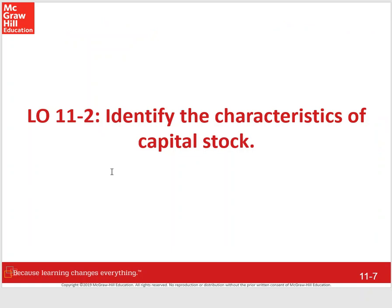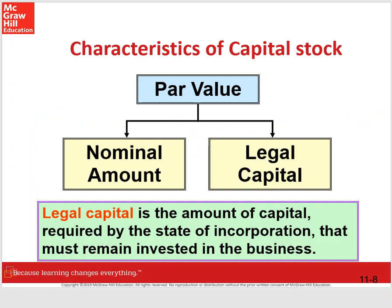We need to look at the characteristics of capital stock — we can use that term to replace what we thought of as common stock all semester. We were thinking of it as common stock with no par value. So what is par value? Par value is a nominal amount — meaning 'in name only.' The par value of a stock really doesn't mean anything; it's in name only. Legal capital is the amount of capital required by the state of incorporation that must remain invested in the business. But I want to clarify more about par value because the textbook isn't telling you the whole picture.